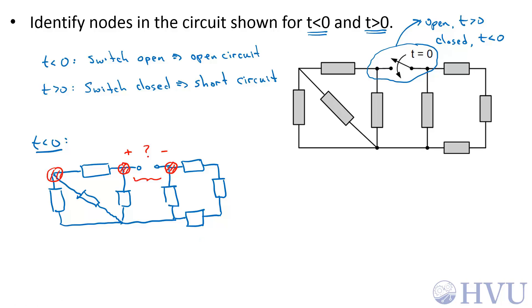This is also a node containing only perfect conductors. This is a node that connects this element, this element, this element, this element, and that element. And this and this are also nodes.